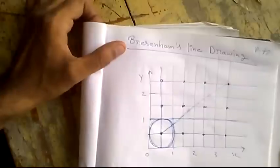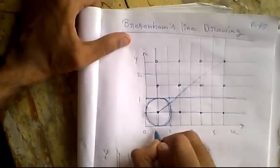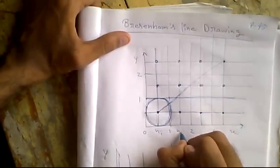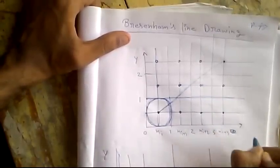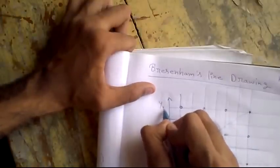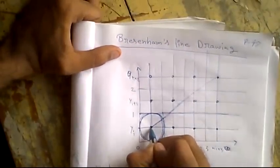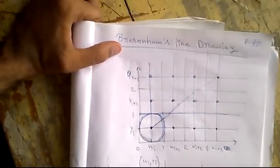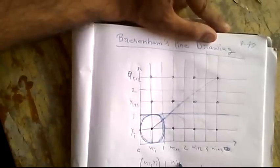Now we will give the positions of the pixels a name. This is xi, this is xi+1, xi+2, xi+3. This is y — yi, yi+1, yi+2. From now, this position is (xi, yi), and the question is whether we will plot the box at (xi+1, yi).